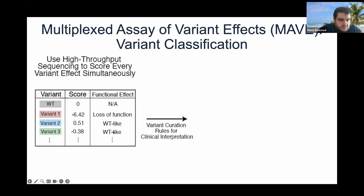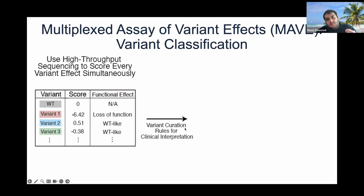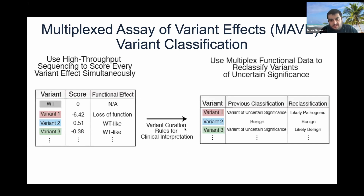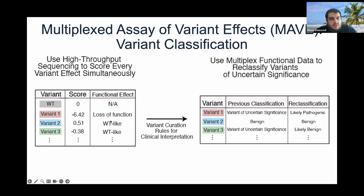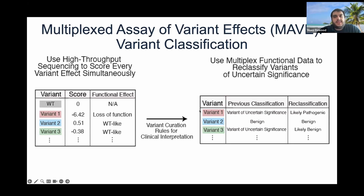This high-throughput scoring method gives you a numerical score — functionally you can understand it as wild type or loss of function. What's really critical here is that you can also use these scores within the American College of Medical Genetics and Genomics clinical variant interpretation guidelines. Functional scores are one line of evidence amongst many within those clinical guidelines, and you can use these functional scores within a calibrated framework to say, for example, that variant one is a loss of function variant and is currently seen clinically as a variant of uncertain significance.